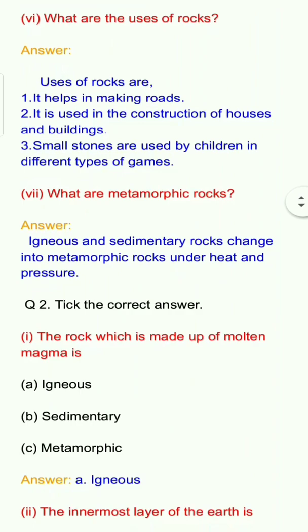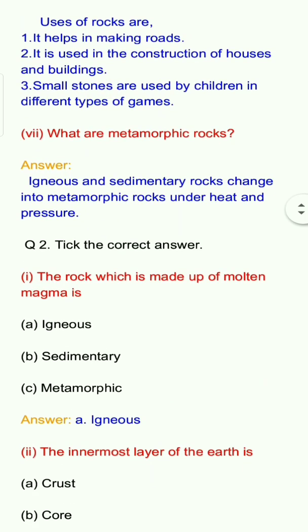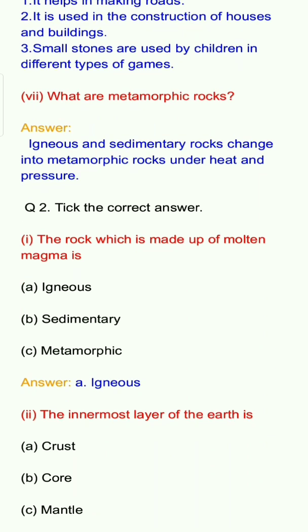Question number 2: Tick the correct answer. Question 1: The rock which is made up of molten magma is? Options: A. Igneous, B. Sedimentary, C. Metamorphic. Answer: A. Igneous.